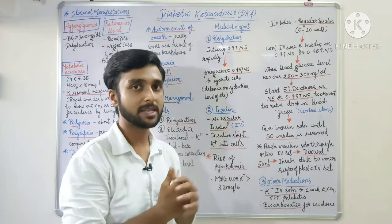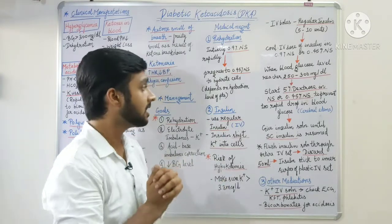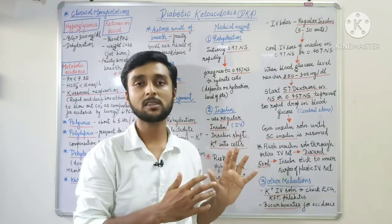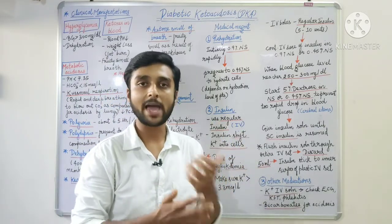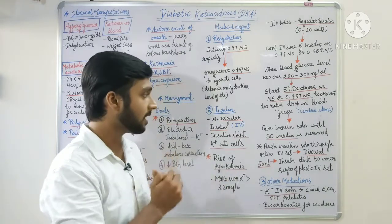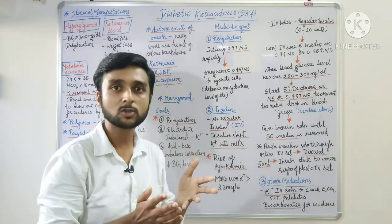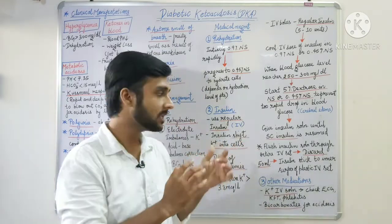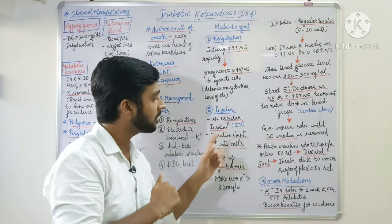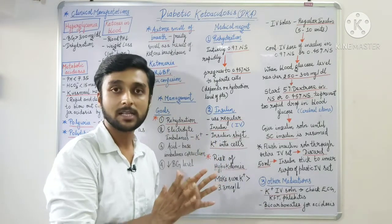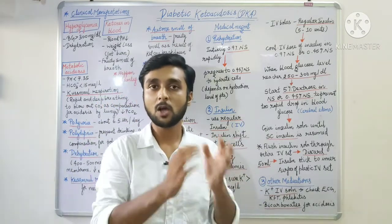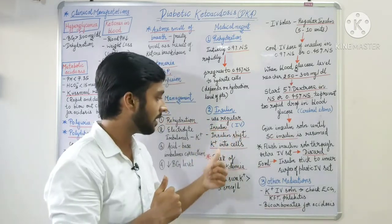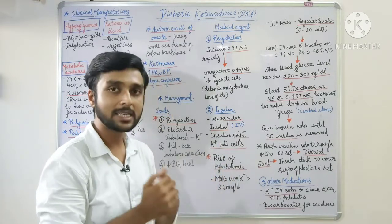After correcting rehydration, we will give insulin. We always use regular insulin because this is the insulin we can give intravenously. Most importantly, insulin shifts glucose from the blood into the cells. In the same way, insulin shifts potassium from the blood into the cells, meaning after giving insulin our potassium moves into cells, creating a risk of hypokalemia.